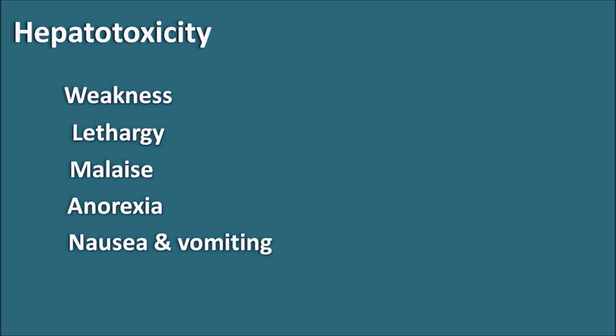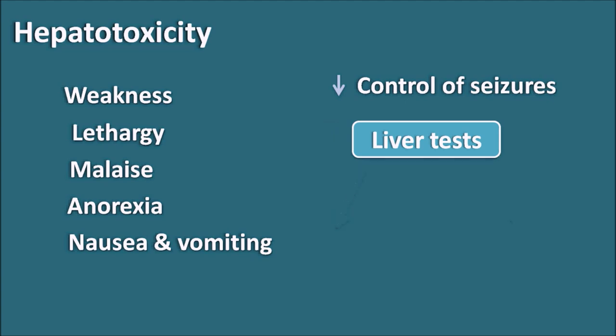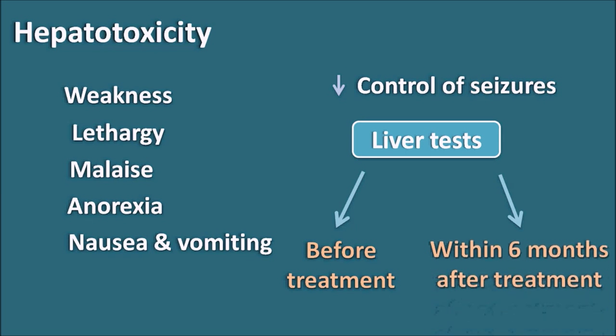These symptoms indicate a risk of liver failure with valproic acid treatment, and hepatotoxicity can also reduce seizure control. Therefore, liver tests should be performed in two phases: before treatment to assess baseline liver function, and regularly for up to six months after starting treatment. If hepatotoxicity develops, valproic acid should be replaced with another antiepileptic drug.